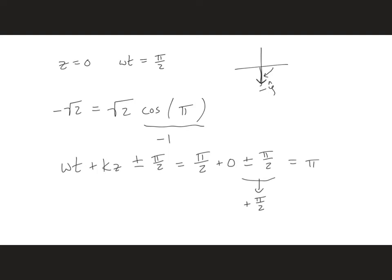Putting all this together, we get E as a function of z and t is x-hat square root of 2 cosine omega t plus kz plus y-hat square root of 2 cosine omega t plus kz plus pi over 2, and that's volts per meter.